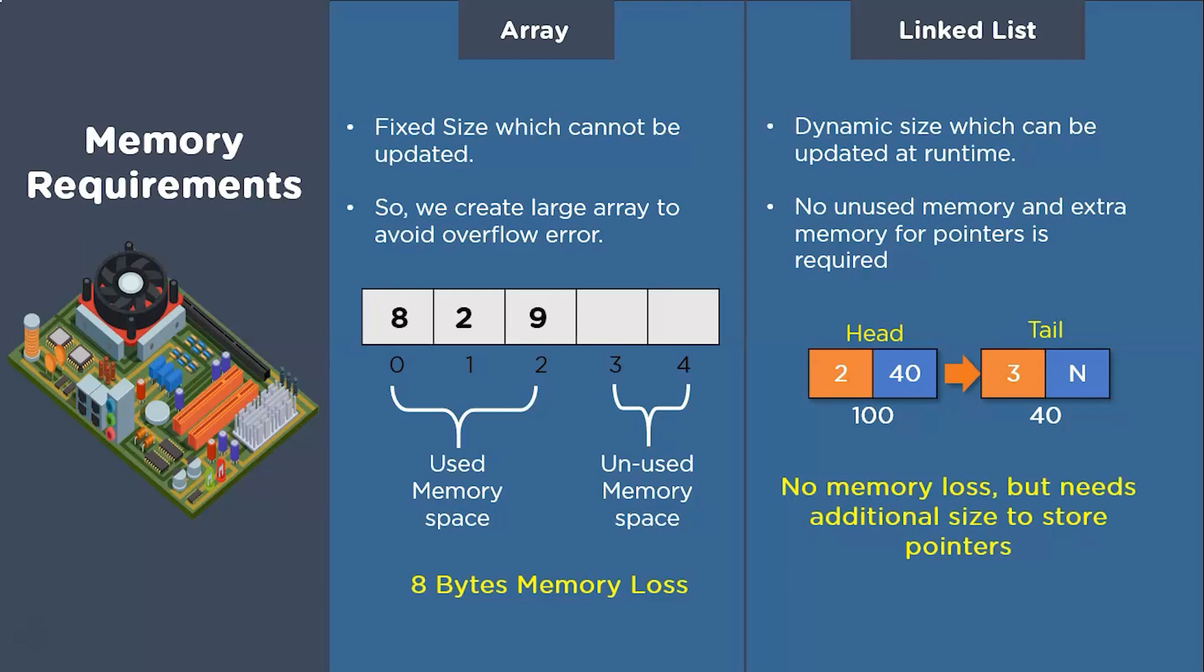Another point with memory allocation that I want to discuss is that sometimes when we create an exceptionally large array, memory may not be available as one large block. This problem that we have with arrays is also called the memory fragmentation problem. But if we use a linked list, the memory will be available as multiple small blocks. So for memory management, linked list is far better than array.